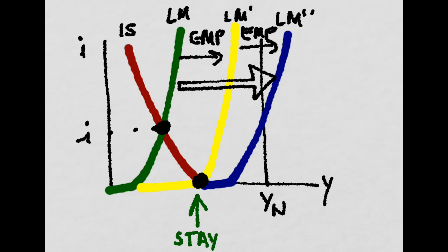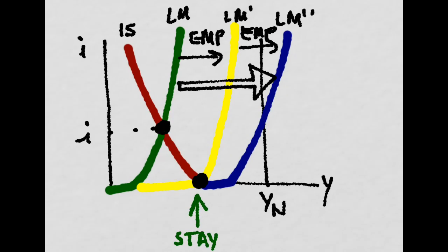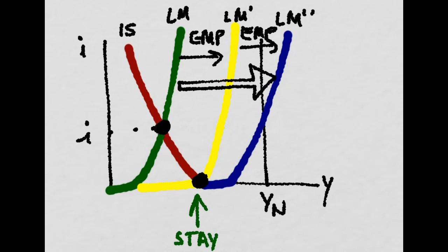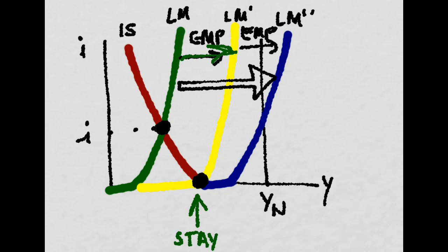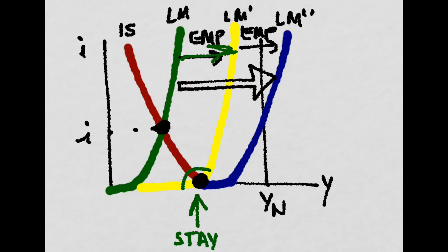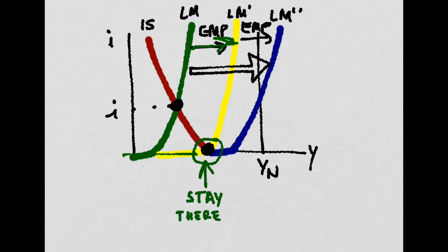Now imagine the government has increased the money supply enough in order to get into a liquidity trap. That is, he has pushed the LM down until it meets the IS at the zero lower bound. Well, the economy will stay there.